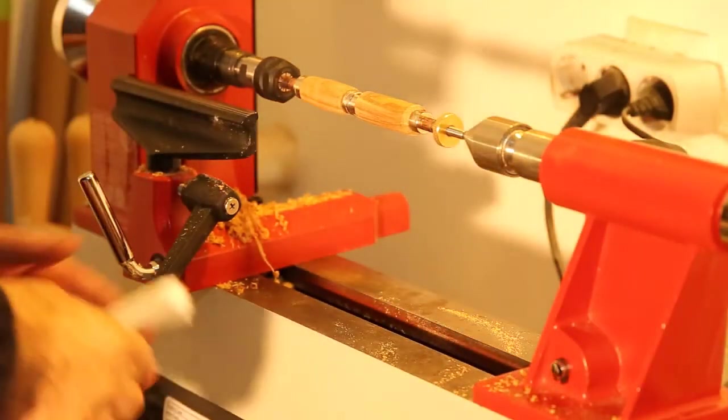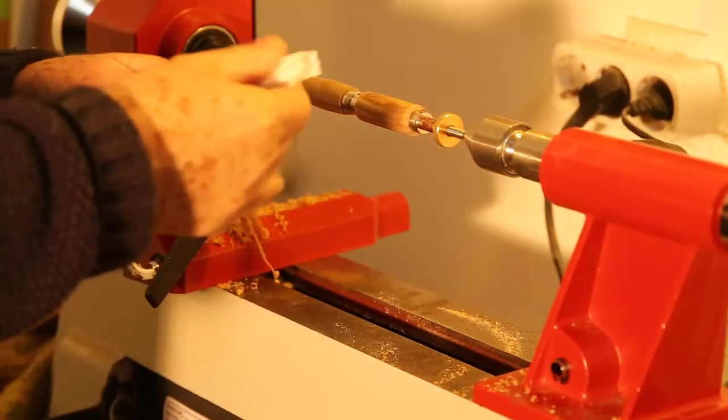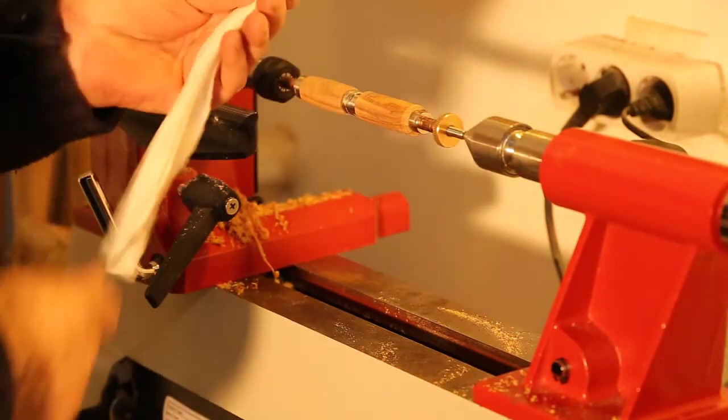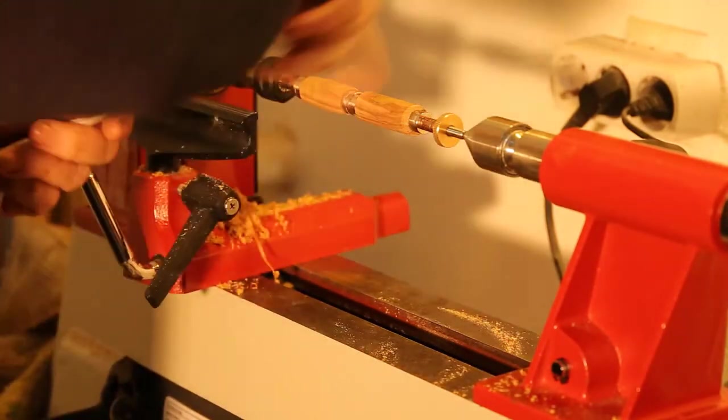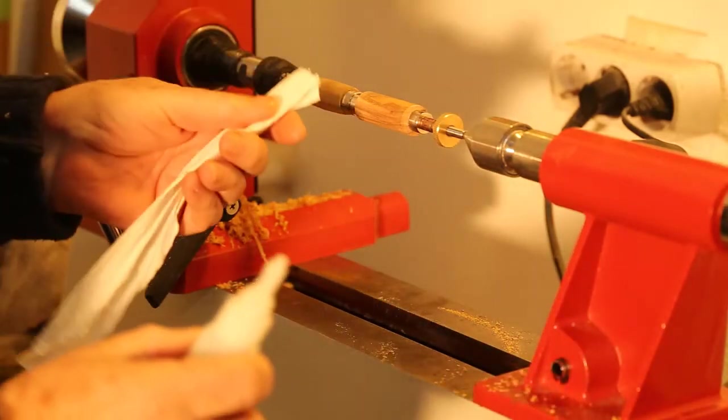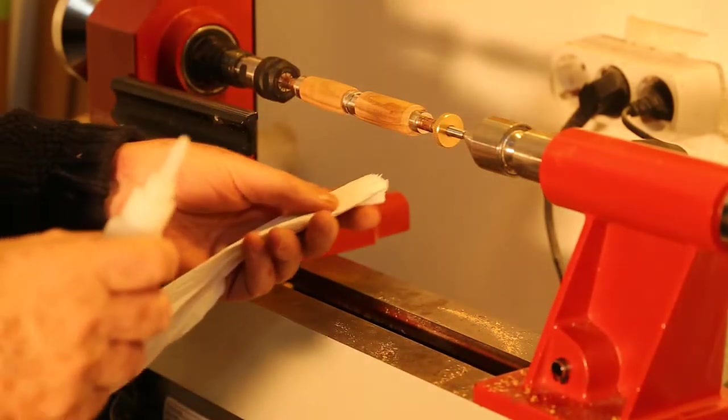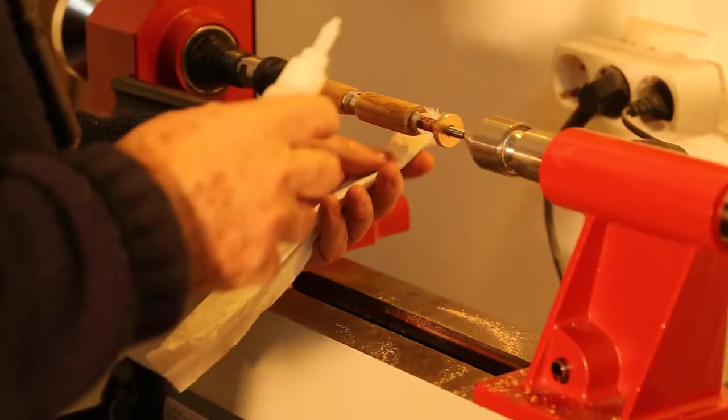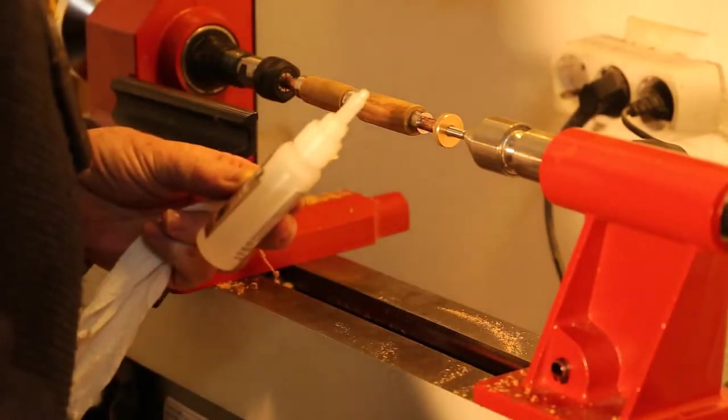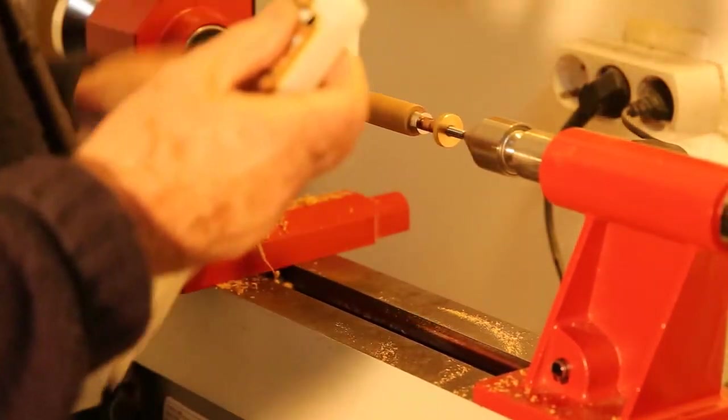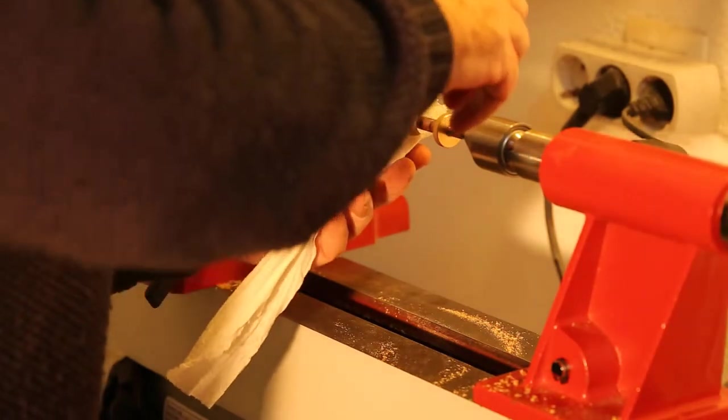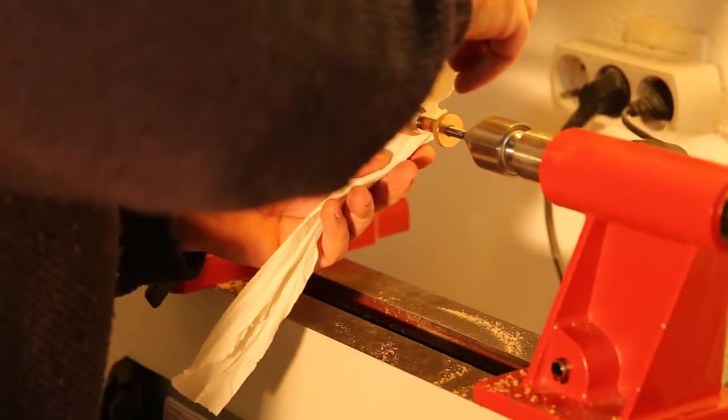The way I apply the super glue is with a piece of paper towel because don't use cloth. Because if you use cloth it can wrap around the lathe. And if you're holding it it can wrap around your finger. And I wouldn't like to know what happens then.